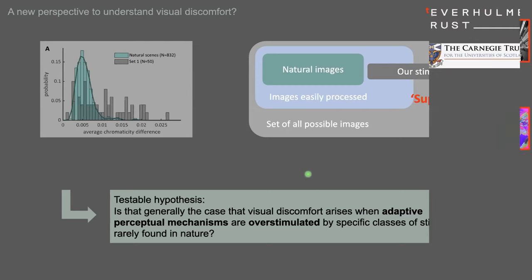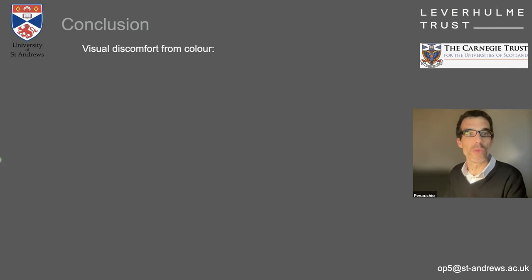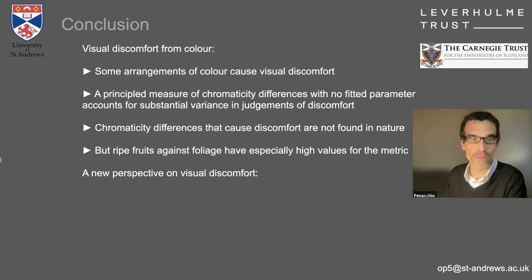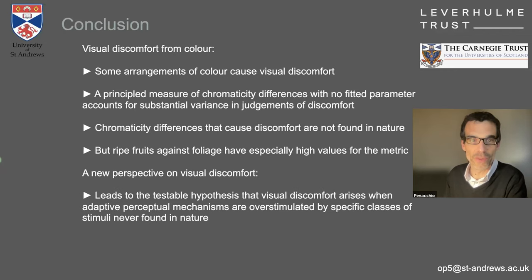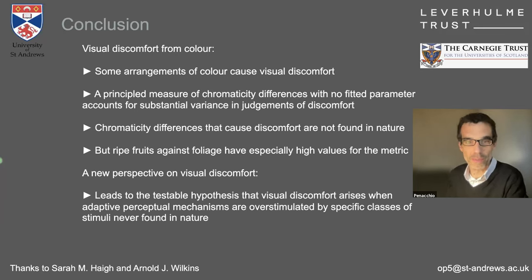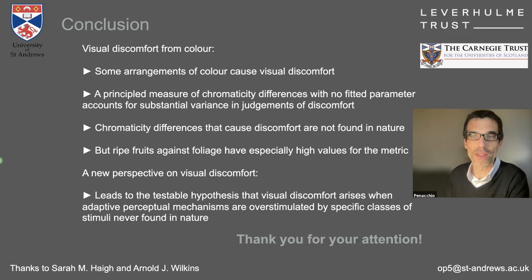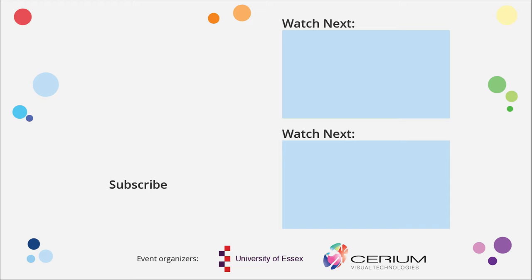But that brings me to the conclusion. So we have seen that some arrangements of color cause visual discomfort. A principled measure of chromaticity difference with no fitted parameters accounts for a substantial amount of variance in judgment of discomfort. Chromaticity differences that cause discomfort are not found in nature. But ripe fruits against foliage have especially high values for the metric. And that brings a new perspective on visual discomfort with a testable hypothesis that visual discomfort arises when adaptive perceptual mechanisms are overstimulated by specific classes of stimuli never found in nature. So I would like to thank Sarhaid and Arnold Wilkins for all the work on this project made together. And I would like to thank you all for your attention. Thank you very much.